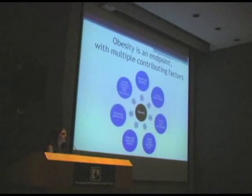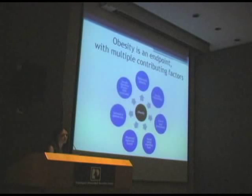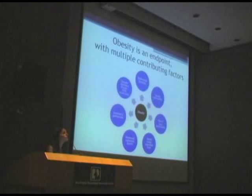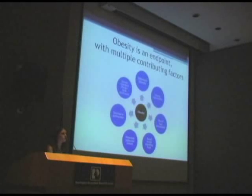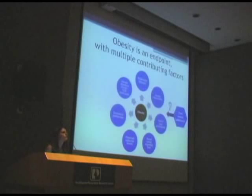Obesity is an endpoint — it has multiple contributing factors. There are genetic disorders that are also associated with obesity, as well as issues related to lifestyle and genetic vulnerability toward obesity. This isn't just a behavioral effect, and this isn't just an environmental effect. It's a variety of issues that are collapsing together to contribute to this syndrome of obesity. The question I pose is: where does food reward fit into this? Where does the fact that food tastes good play a role?